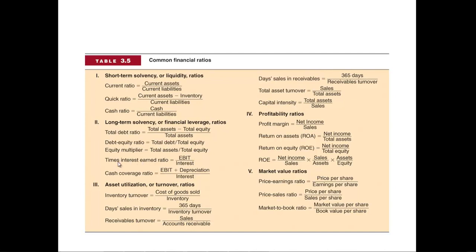A common ratio we look at is times interest earned. It's EBIT divided by interest — earnings before interest and taxes divided by interest. It tells you how much the firm is earning over the amount of interest payments it has. A company in good financial shape will often have an EBIT of 100 or 200, meaning they're earning way more than the amount of interest they're paying.